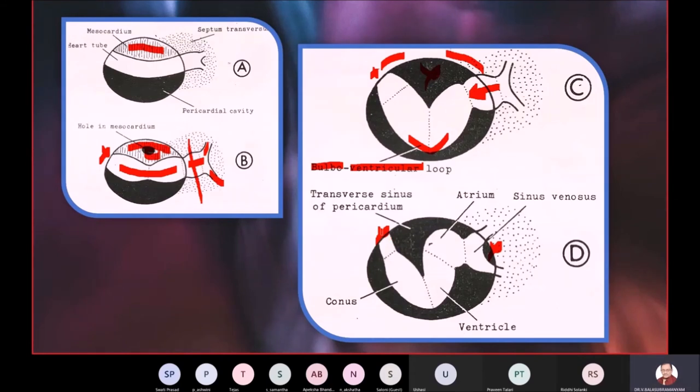Therefore, in item D, you will see that the arterial and the venous end are coming closer and closer. At what cost? It means the cost of bending of the tube at the region where the bulbus cordis. This is the bulbus cordis, this is the ventricle. At the junction of the bulbus cordis and the ventricle, the loop begins, the first loop, that is called the bulboventricular loop. Understood? Yes.